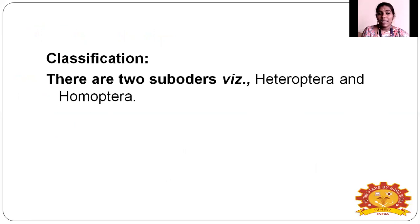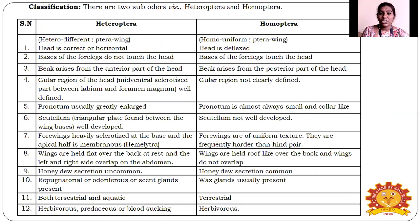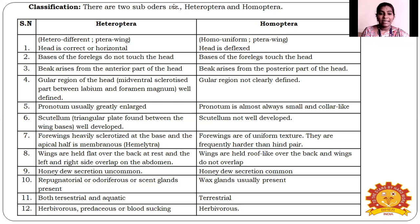There are two suborders in Hemiptera: Heteroptera and Homoptera. Heteroptera means 'different wings' — remember bugs for Heteroptera, and aphids for Homoptera. For Heteroptera, insects have different wings; for Homoptera, like aphids, they have uniform wings. The head in Homoptera is erect or horizontal in shape, while in Heteroptera the head is deflected in shape or position.